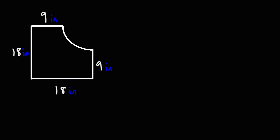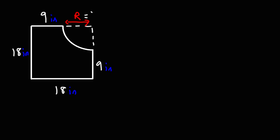For our next example, we have a quarter circle that has been cut out of a square. If we extend this part, we can see the quarter circle, and this represents the radius. Now if this is 18 and this is 9, that means this part has to be 9. From the other side as well — if this is 18 and this is 9, this has to be 9 as well. So the radius is 9 inches.